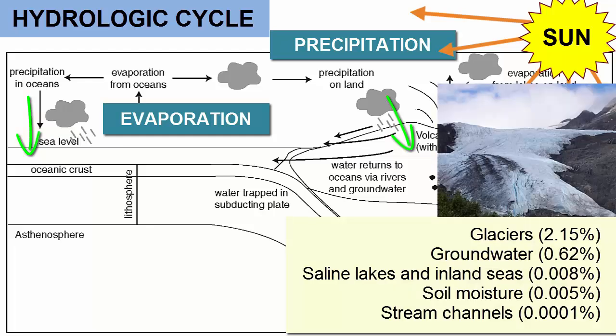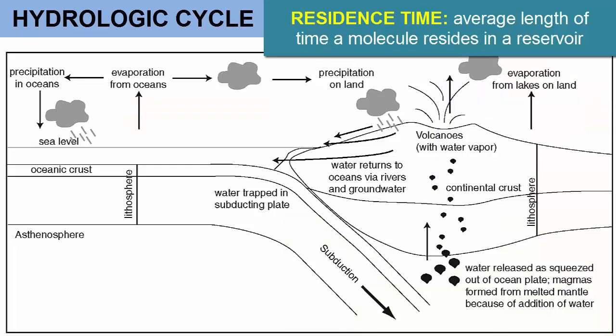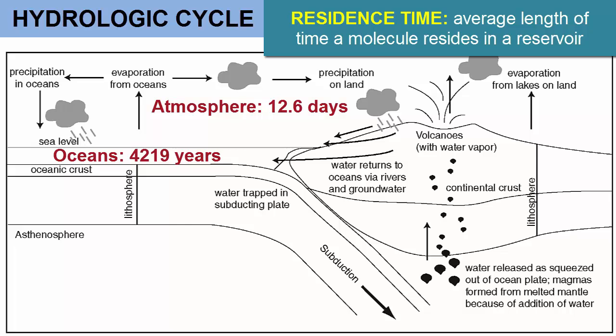If it rains on land, it gets trapped in glaciers, or streams, or soaks into the ground. Eventually that water runs back to the ocean where it can get picked up again. Through continued evaporation and precipitation, water moves in and out of various reservoirs, residing in each for a limited time. The residence time, or average length of time a water molecule resides in the oceans, is 4,219 years. In comparison, the residence time of water in the atmosphere is 12.6 days.